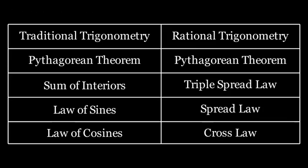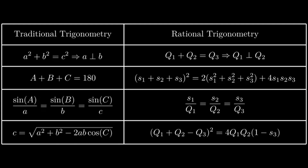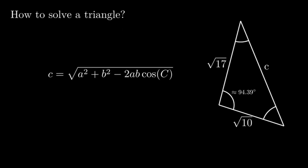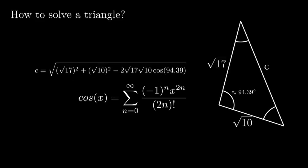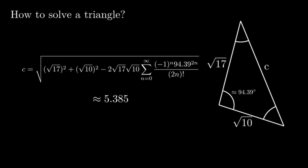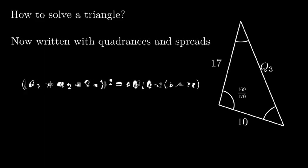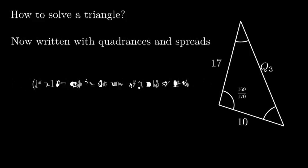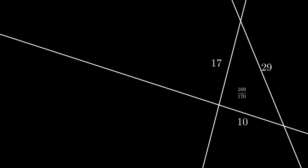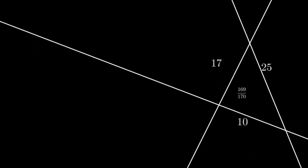Now that we have these identities at our disposal, we can solve any triangle using rational trigonometry that could be solved using traditional trigonometry. If we knew an angle and two side lengths, we could find the final side length by applying the law of cosines. Plugging everything in, we get our missing side. Remember, though our calculator makes it simple, cosine is an infinite series that is happening each time we do such a calculation. With the same information translated to the language of rational trigonometry, we can find the same answer. In fact, some information has been gained, as the rational approach gives us the answer for each of the potential intersections of a 169 over 170 spread.